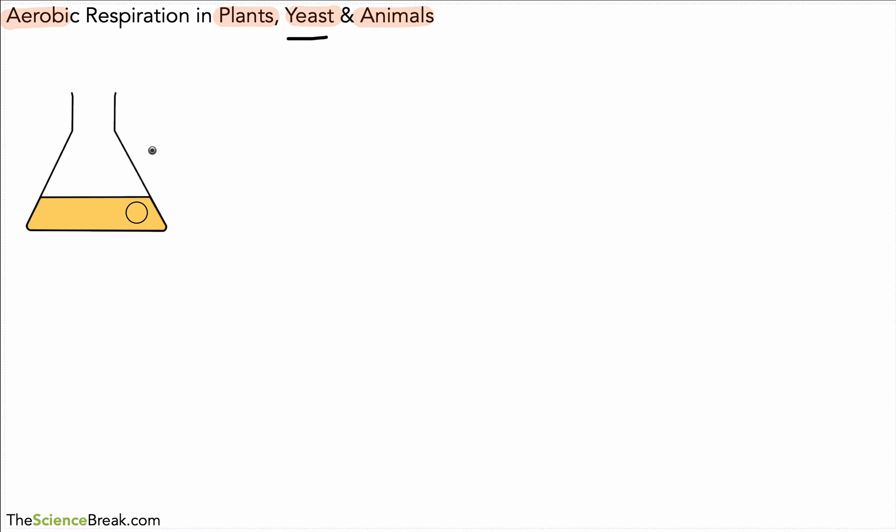Okay so what we've got to help us understand this idea is we've got this little container, this is called a conical flask, and in that container we have a solution with yeast. So we've got yeast and sugar solution. Sugar solution is basically just sugar dissolved in water and that acts as a food source to help the yeast.